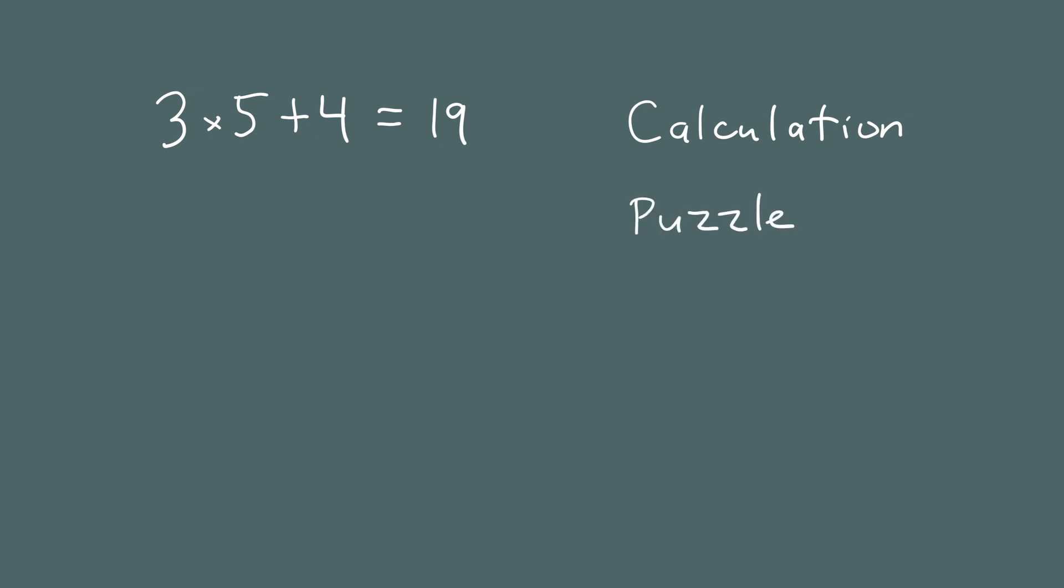What if instead of 3 times 5 plus 4 is 19, I asked the question, 3 times what number plus 4 equals 19? Now, you already know the answer to this puzzle. You know it's 5 because we did that calculation to start. But what if you asked this to someone? You went up to someone on the street and said, 3 times what number plus 4 equals 19? They wouldn't know off the top of their head. They'd have to think about it a little bit. And that's one of the things you'll learn how to do in algebra.